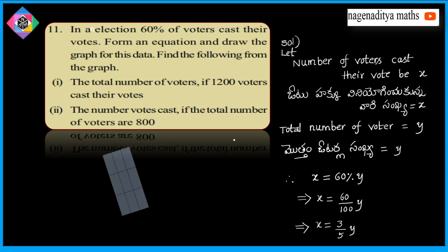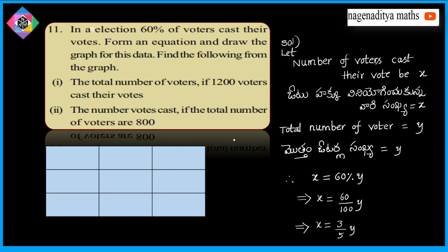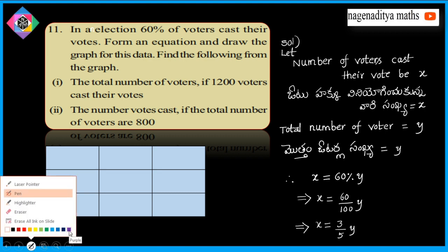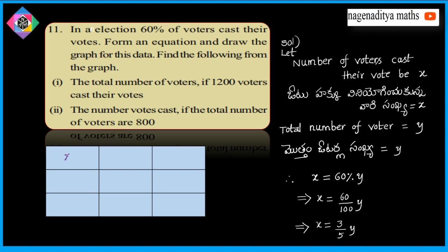This graph is represented in a table. The table has columns x, y, and (x, y). So first, x depends on the y value. For y value 1000, substitute: 3 by 5 into 1000 — cancel 200 — so 200 into 3 gives 600. So y value 1000, x value 600.